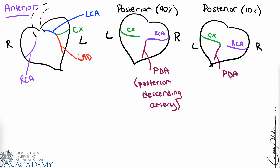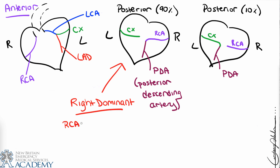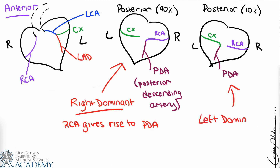When the right coronary artery gives rise to the posterior descending artery, we call that right dominant — which applies to 90% of the population, or nine out of every ten people. When the circumflex gives rise to the posterior descending artery, that is called left dominant, which applies to one out of every ten people.